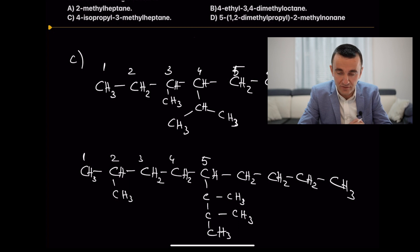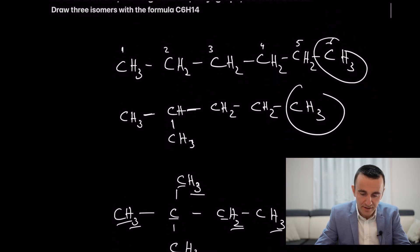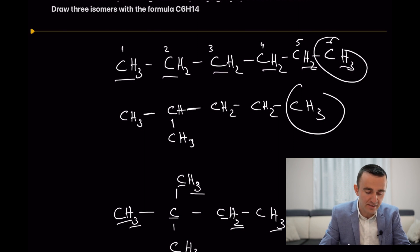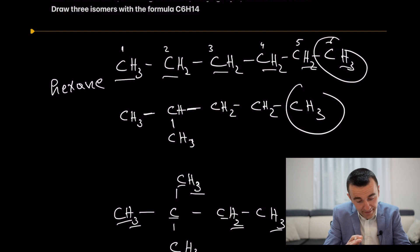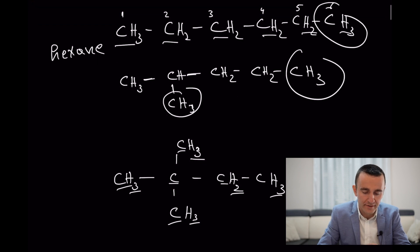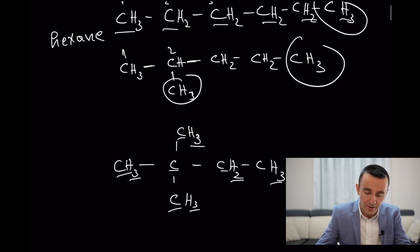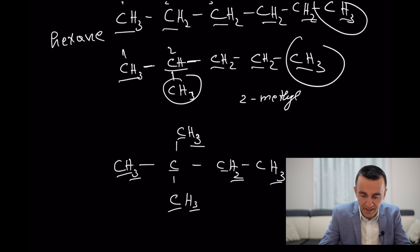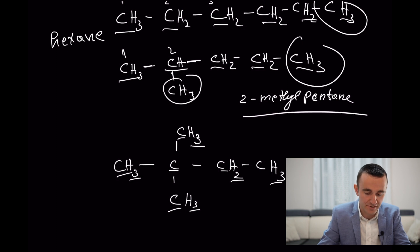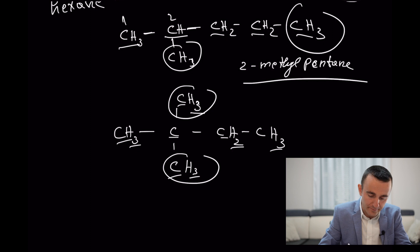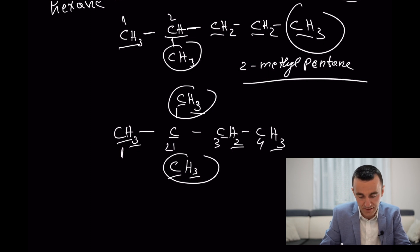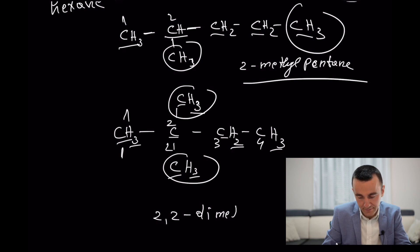Now let's do the reverse: given the structure, write the name. The first isomer has six carbons in a straight chain, so the name is hexane. For the second isomer, number the chain to give the substituent the lowest number — the methyl is at position two, and the parent chain has five carbons (pentane), giving 2-methylpentane. For the third isomer, the parent chain has four carbons (butane) with two methyl groups both at position two, giving 2,2-dimethylbutane.